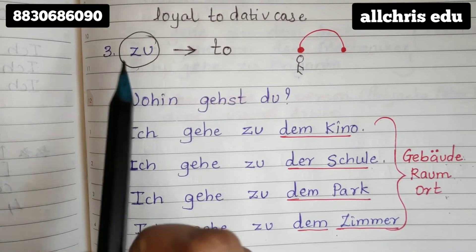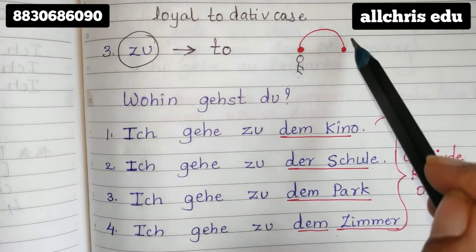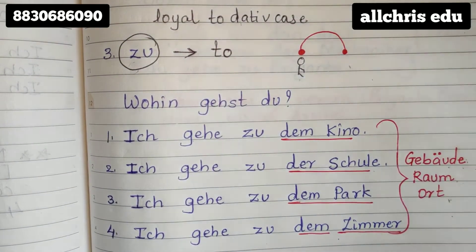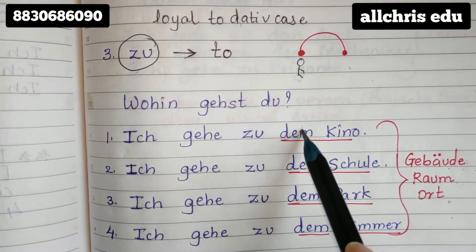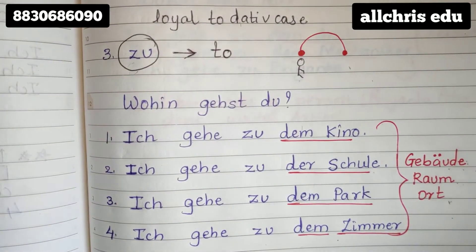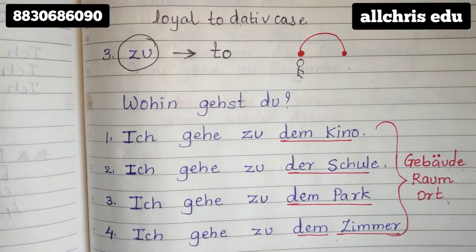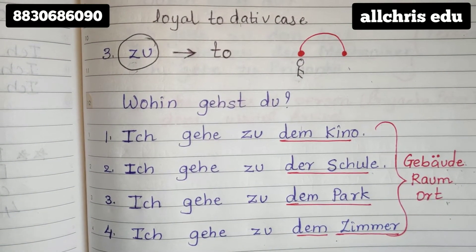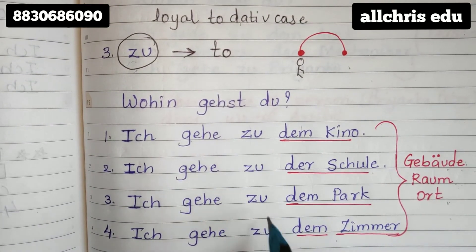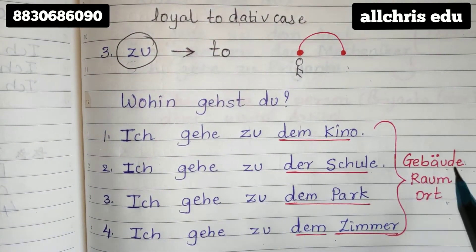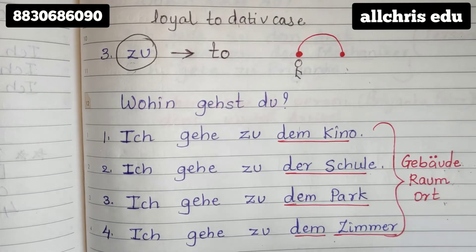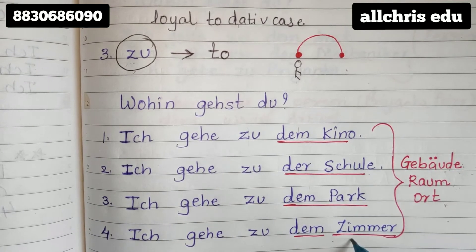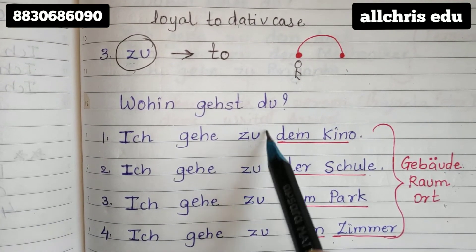Now students, with the word 'zu' — though you can see motion here — 'zu' is very loyal to the dative case. So though we are in a motion context, we have to write the article with dative only, because 'zu' comes under dative prepositions. You are writing 'zu' because you are going to that place, and that place is a building, a room, or some particular place which is not a city or country. But 'zu' is dative itself, so we write the dative article.